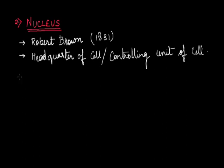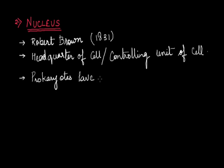As we know, all eukaryotic cells have a well-defined nucleus and therefore they are called eukaryotes — meaning 'true nucleus.' Whereas in the case of prokaryotes, they lack a well-defined nucleus. So where do they contain their genetic material? They contain their genetic material in the center of the cell in the form of a nucleoid or a genophore.